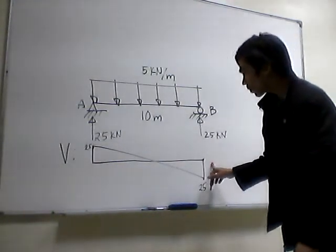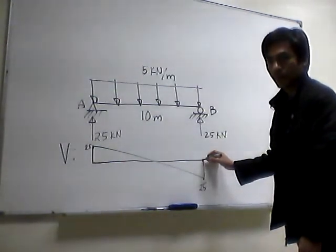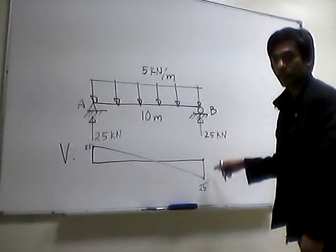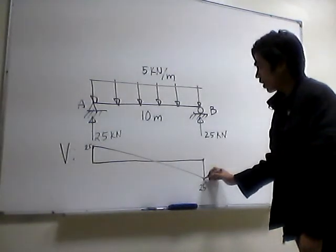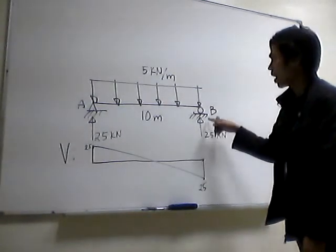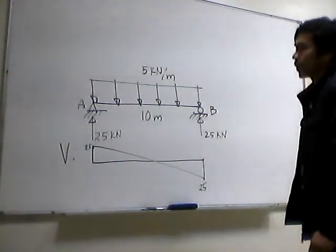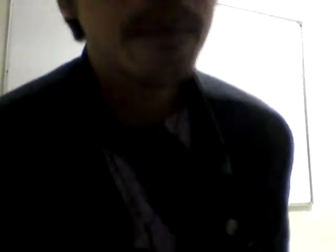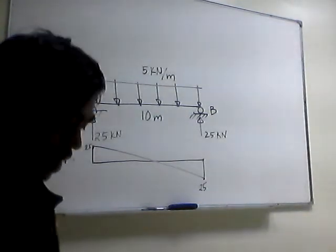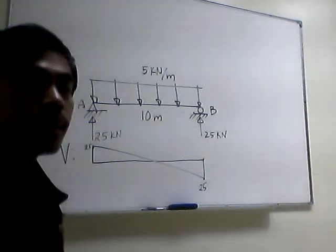Remember that the shear diagram should close at 0 — that also determines if your reaction at B is correct. Meaning, if the value at the end is 25, it should be equal to the reaction at B so that the shear diagram closes at 0. So we now have the shear diagram. What we do now is draw the moment diagram.